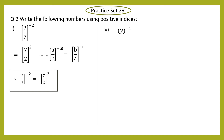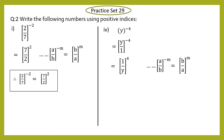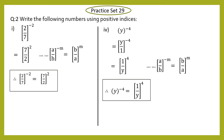Sub-question 4: y raised to minus four. We don't have a fraction as a base, so y can be written as y upon one, raised to minus four. We can now relate this to a upon b, whole raised to minus m, equals b upon a, raised to m. So y upon one becomes one upon y, and the index becomes positive four. Final answer: y raised to minus four equals one upon y, raised to 4.